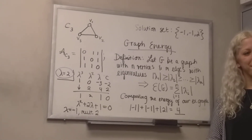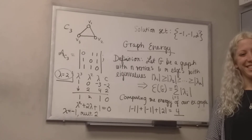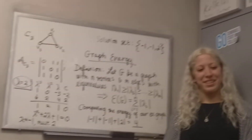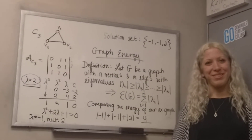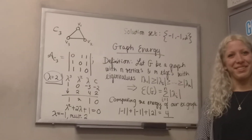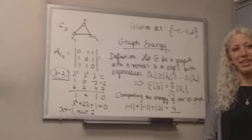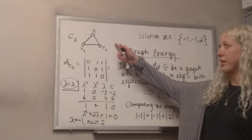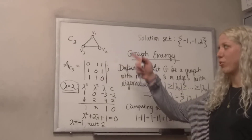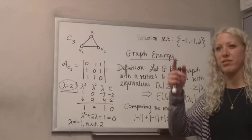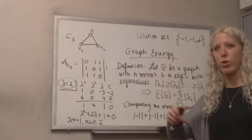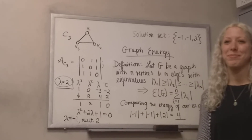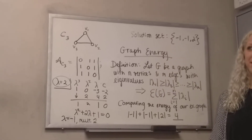Or the Petersen graph — yeah, that's the counterexample. It doesn't work. There are exceptions to that assumption, but most of the time, if you're looking at the cycle graph on three vertices and then four, five, and six, yes, the energy increases — sort of linearly maybe.